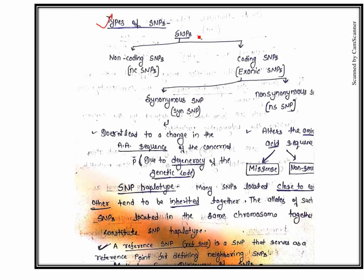Coming to the types of SNPs — the name reflects where the SNP is located. SNPs present in intron regions are called intronic SNPs or non-coding SNPs. SNPs in coding regions are called exonic SNPs. Coding SNPs can be of two types: synonymous SNPs, which do not lead to a change in the amino acid sequence, and non-synonymous SNPs, which alter the amino acid sequence.